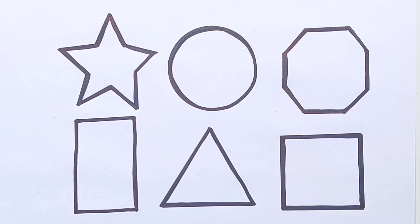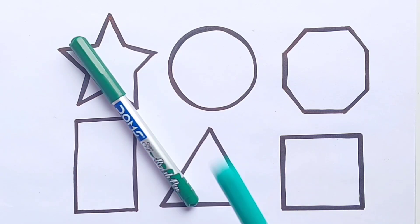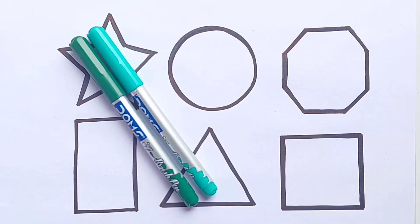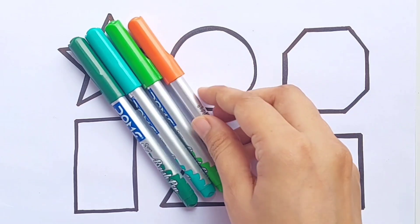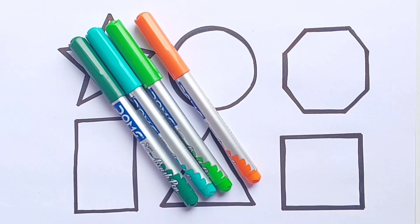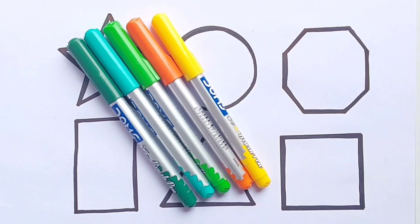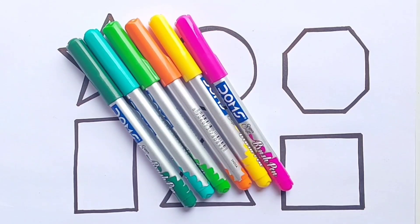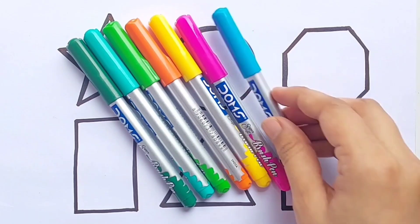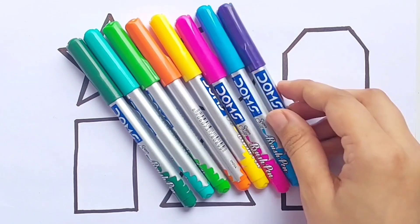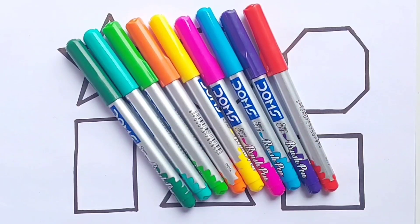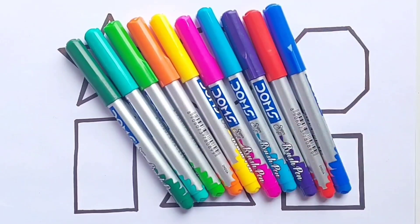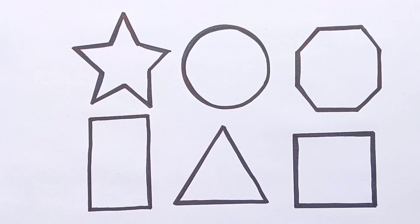Let's Learn Colors Name. Green Color. Sea Green Color. Light Green Color. Orange Color. Yellow Color. Pink Color. Sky Blue Color. Purple Color. Red Color. Blue Color. Brown Color.